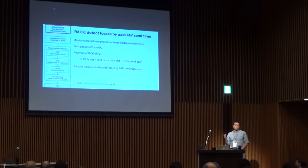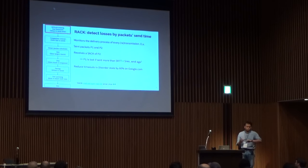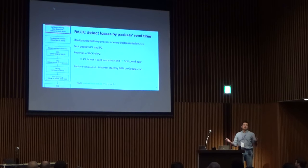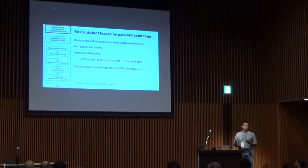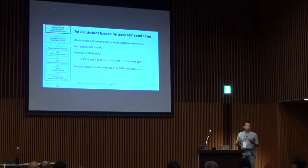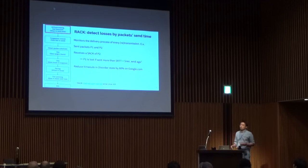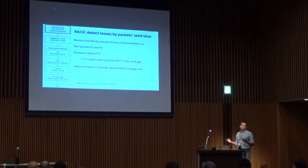For loss recovery, people are probably familiar with the dupack threshold — if you receive three dupacks, some packet is probably lost and you retransmit the first un-ACKed packet. Over time this has seen its limits, primarily because for short flows you don't get to count three dupacks, or when you have reordering, the magic number three is kind of wrong.